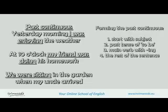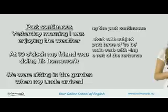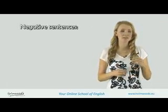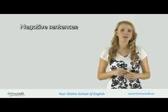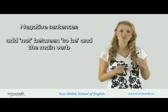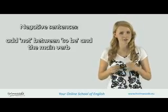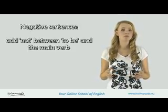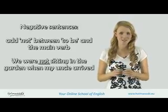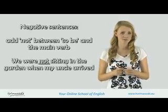You can now add the rest of the sentence. If you want to make a negative sentence in the past continuous, you have to add not between the form of to be and the main verb. So, for example, we were not sitting in the garden when my uncle arrived.